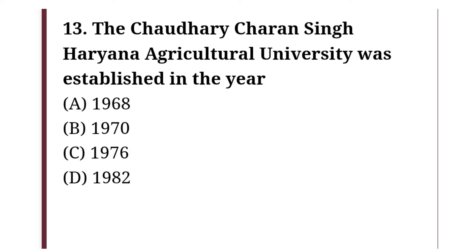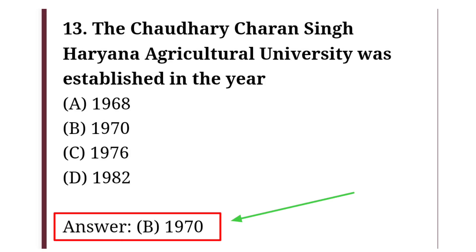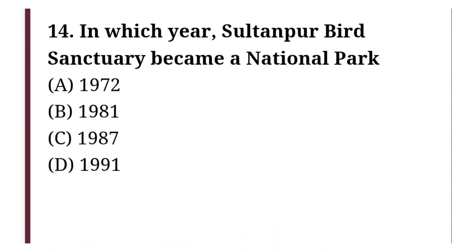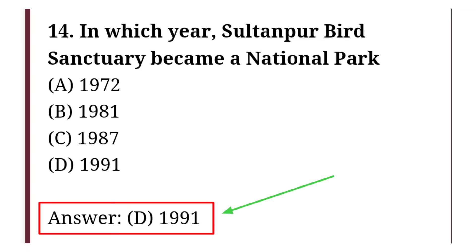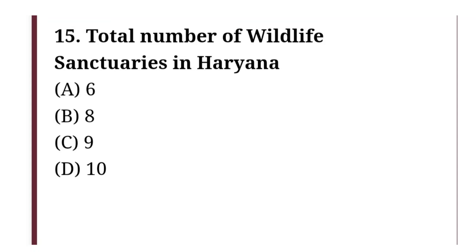Chaudhuri Charan Singh Haryana Agricultural University was established in which year? The correct answer is option B, that is 1970. In which year did Sultanpur Bird Sanctuary become a national park? The correct answer is option D, that is 1991.